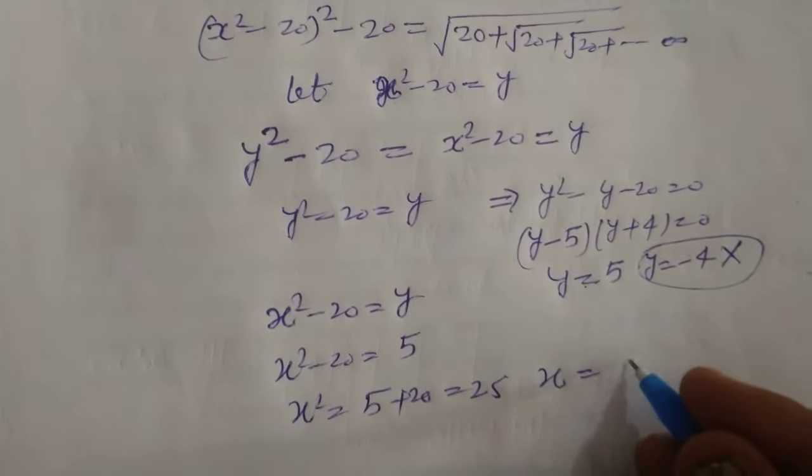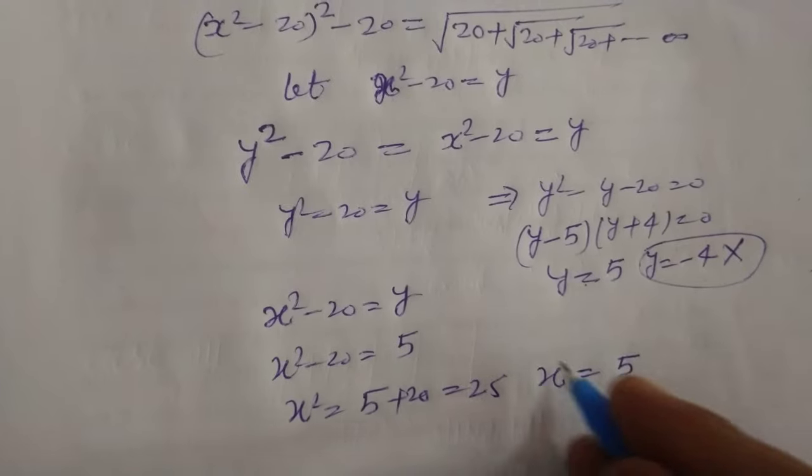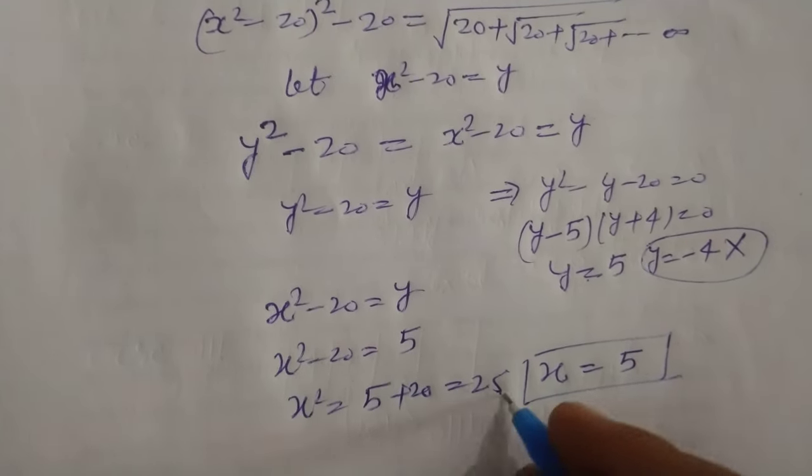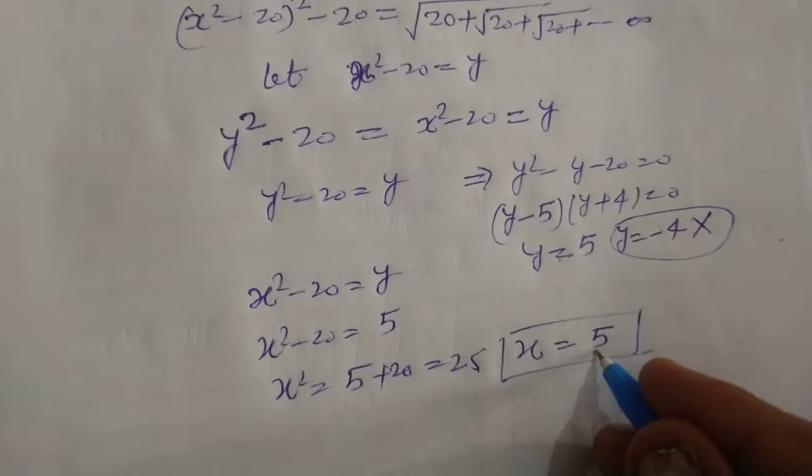So, X equal to 5. Square root of 25 is 5. So, value of X is 5.